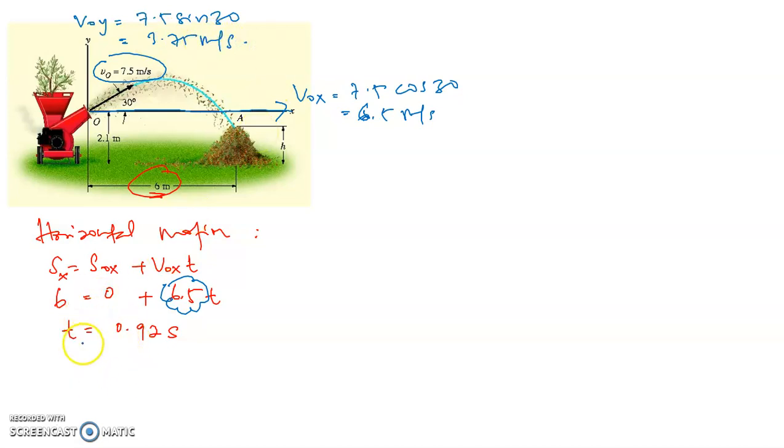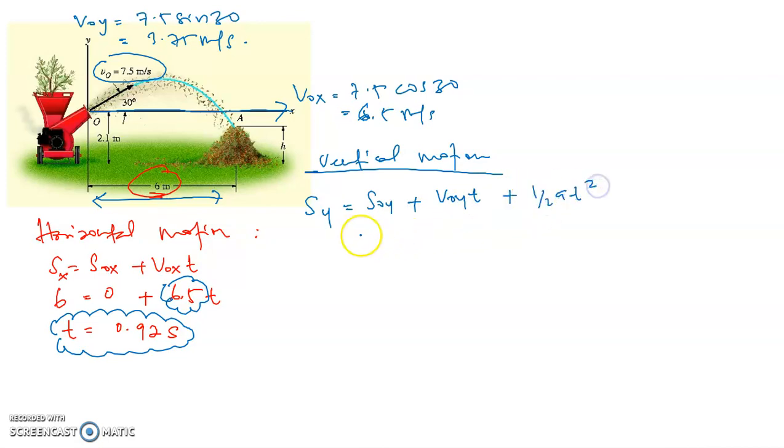Since you know the time traveling to project the range of 6 meters, you can calculate using the vertical motion formula. This is the vertical motion: Sy = S0y + V0y*t + 0.5*a*t². S0y is equal to 0, and then plus V0y, which is 3.75*t. We know t is 0.92.